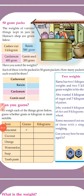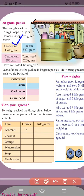The weight of various things kept in jars in Hamsa's shops are given below. In a jar, have you noticed the weights? Each of these can be packed into 50 gram packets. How many packets of each would there be?